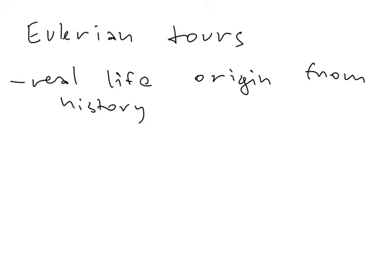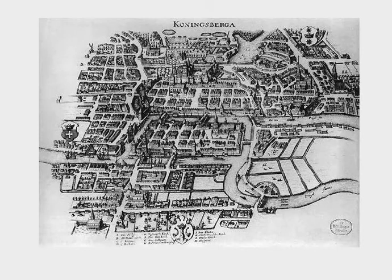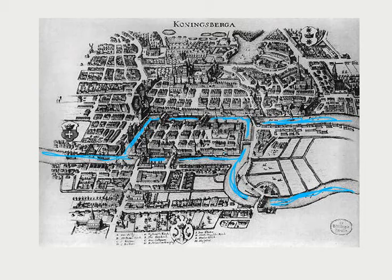There is a town called Königsberg, and here is the map of the town. In the town there were two rivers — one here, the other one here — which join together like this. As they join together they create a small island in the center. In the town there are several bridges, and there are five bridges connecting the center island.